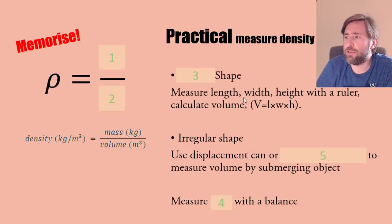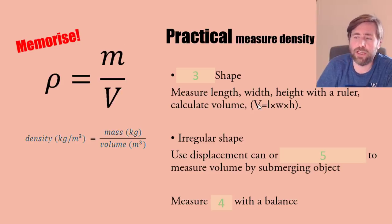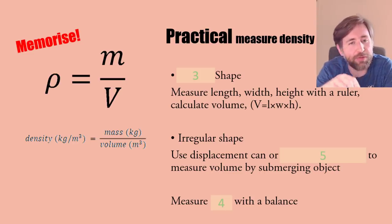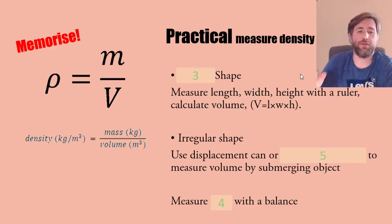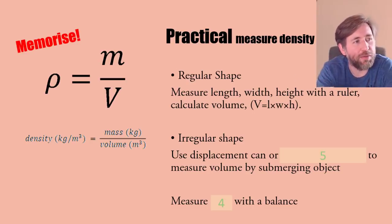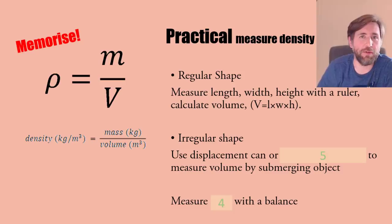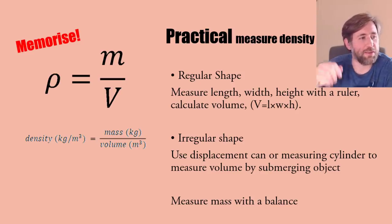This is a practical to measure density. There's two types of shapes. For a regular shape, measure the length, width, height with a ruler, calculate the volume from length times width times height. For an irregular shape, you need to use a displacement can or measuring cylinder by submerging the object. Always measure the mass with a balance.